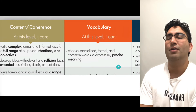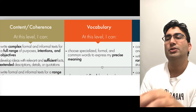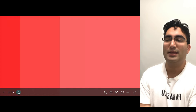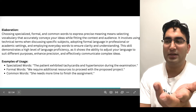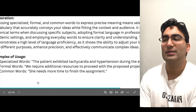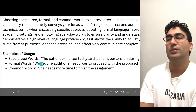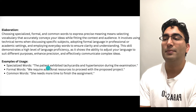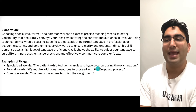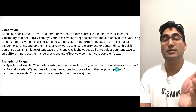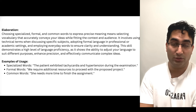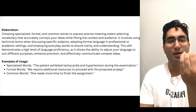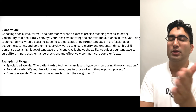Writing is fairly simple — you have one bullet point in the examiner marking criteria: choose specialized, formal, and common words to express your precise meaning. The first thing is specialized words — simple words that are specific, not general. For example: the patient exhibited tachycardia and hypertension during the examination. These are medical terms — specific, concrete, specialized words. If you say something like the patient was having a lot of problems overall with his health, that's not concrete or specialized enough. Make sure to mostly keep it specialized.